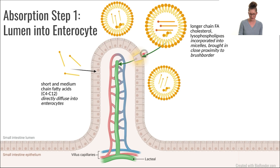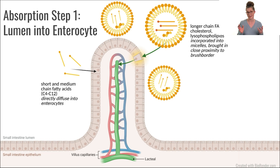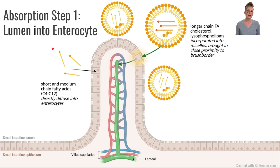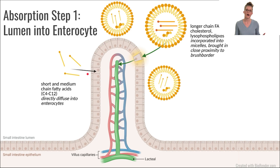The fatty acids will end up getting repackaged inside the enterocyte — we'll talk about that in the next step. There is some research suggesting other proteins may be involved, but that's still an area under investigation. The next slide will cover specific proteins required for cholesterol absorption across the luminal side. When it comes to shorter and medium chain fatty acids, they actually don't need to be incorporated into micelles. Those fatty acids — 4 to 12 carbons long — are directly absorbed right through the luminal side of the enterocyte.